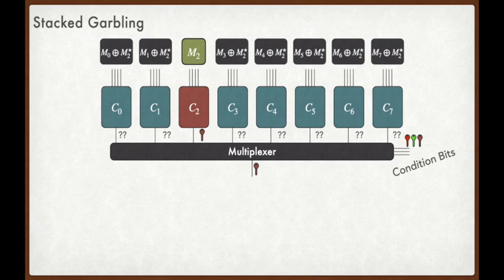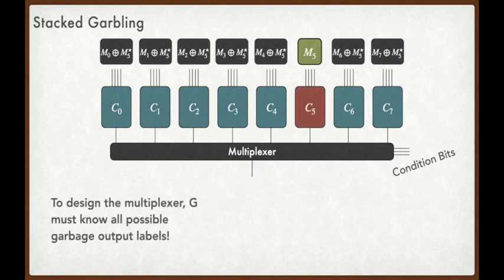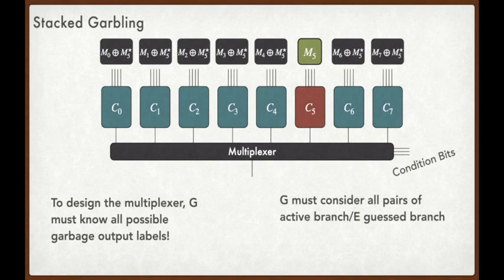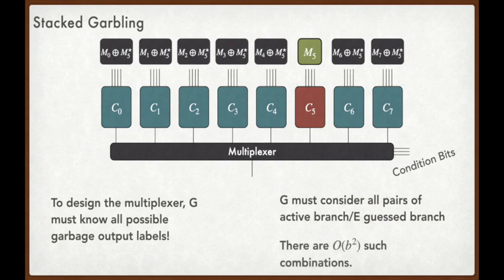Suppose some different branch, say C2, were active. Then the specific garbage material for each inactive branch would be different, which means that the garbage outputs from each branch will also be different. In full generality, each of the B branches has B-1 possible garbage outputs corresponding to each possible different active branch. To garble the multiplexer, the generator G must compute each possible garbage output label. This requires that the generator G evaluate each of the B branches B-1 times, leading to quadratic computation overhead.